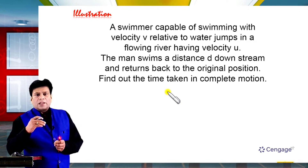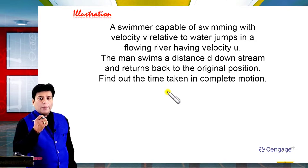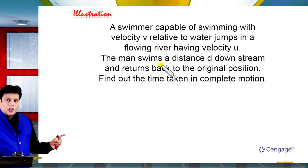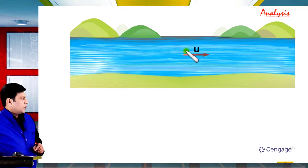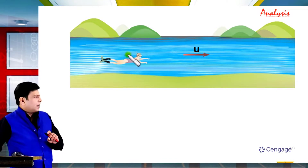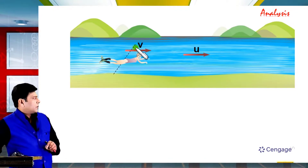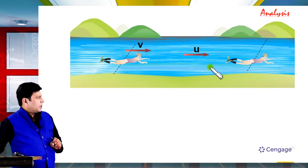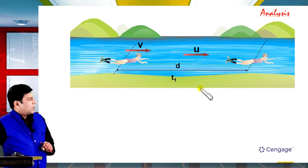Before solving, let us draw a rough diagram representation of the situation — first for the downstream case, then for the upstream case. For the downstream case, suppose the river velocity is U and the swimmer starts from a position, moving with velocity V with respect to water. The swimmer covers distance D in the downstream direction and the time taken is T1.